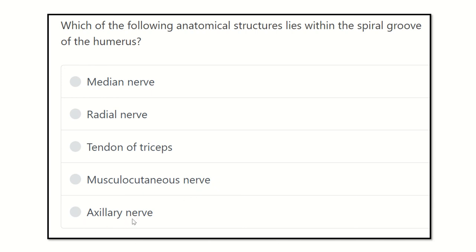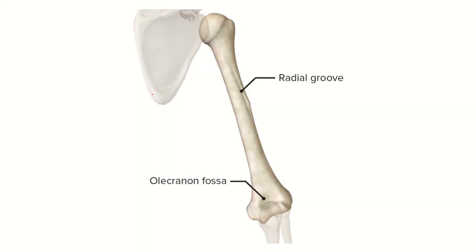First of all, we have to identify the spiral groove which lies in the humerus and the structure which lies within it. Here we can see the humerus — this is the upper end, the lower end, and the shaft of the humerus. They have the olecranon fossa and the spiral groove.